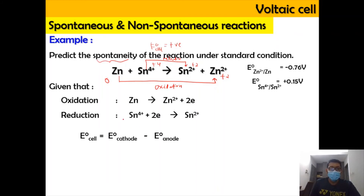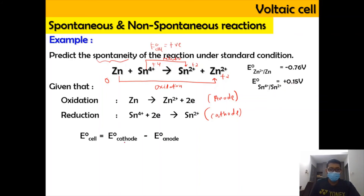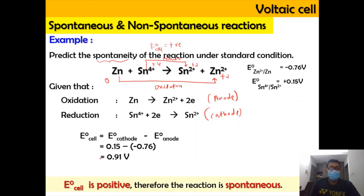Delta E0 cathode is for Sn⁴⁺ → Sn²⁺, which has a value of +0.15 V. Delta E0 anode is for zinc, which is −0.76 V. Plugging in: E0 cell = 0.15 − (−0.76) = +0.91 V. Because the E0 cell is positive, we can conclude that the reaction is spontaneous.